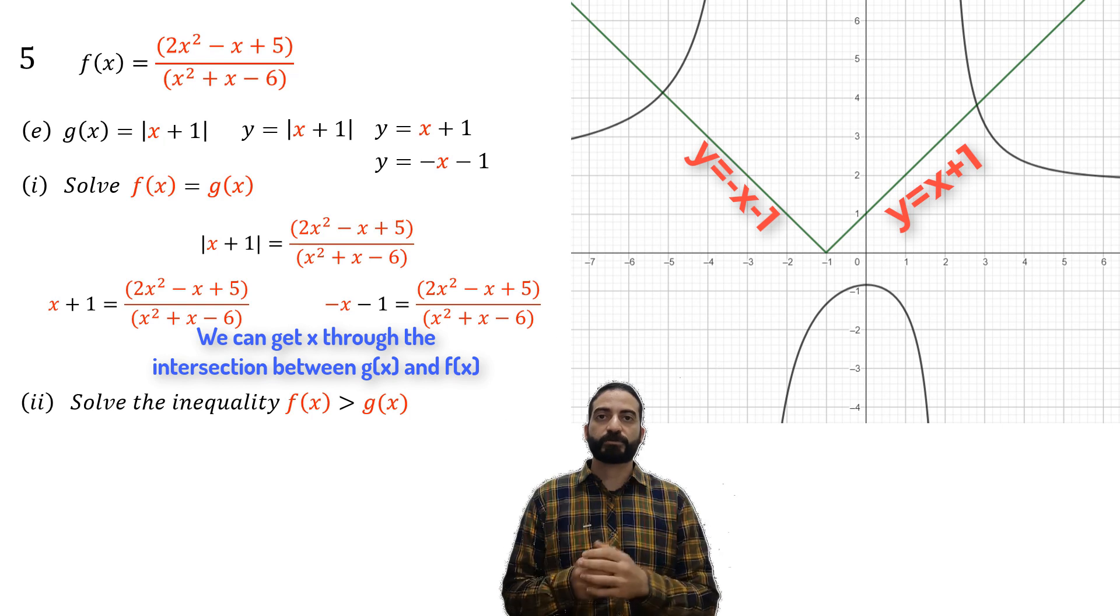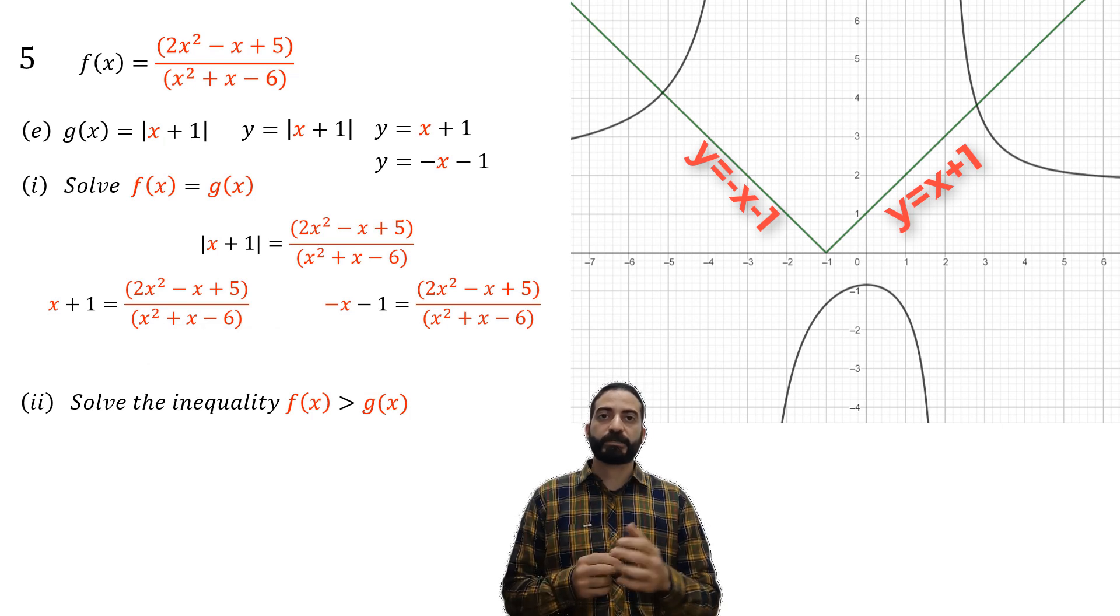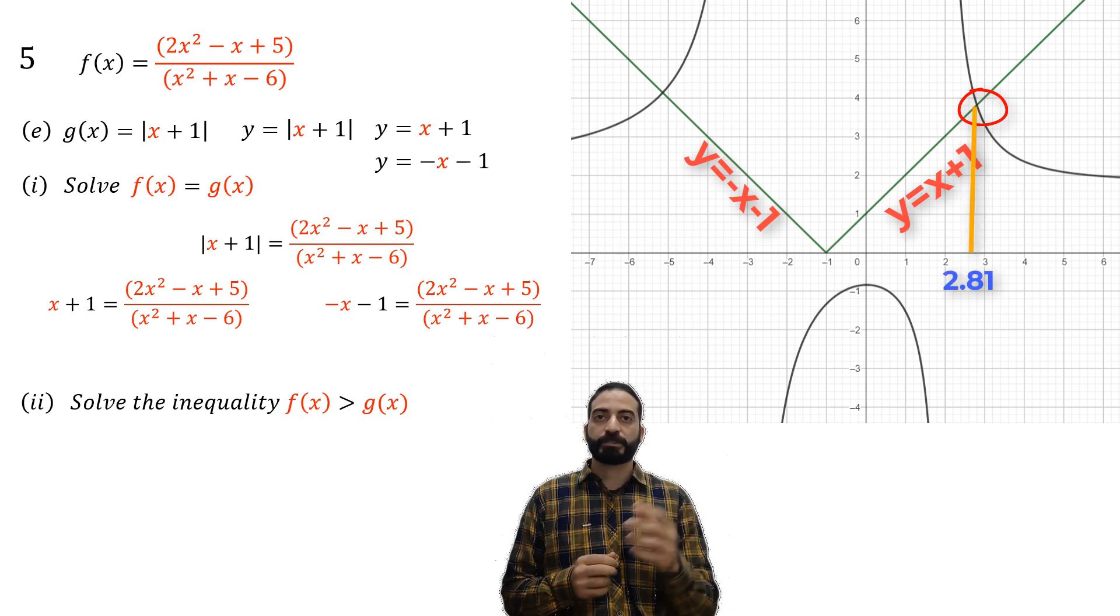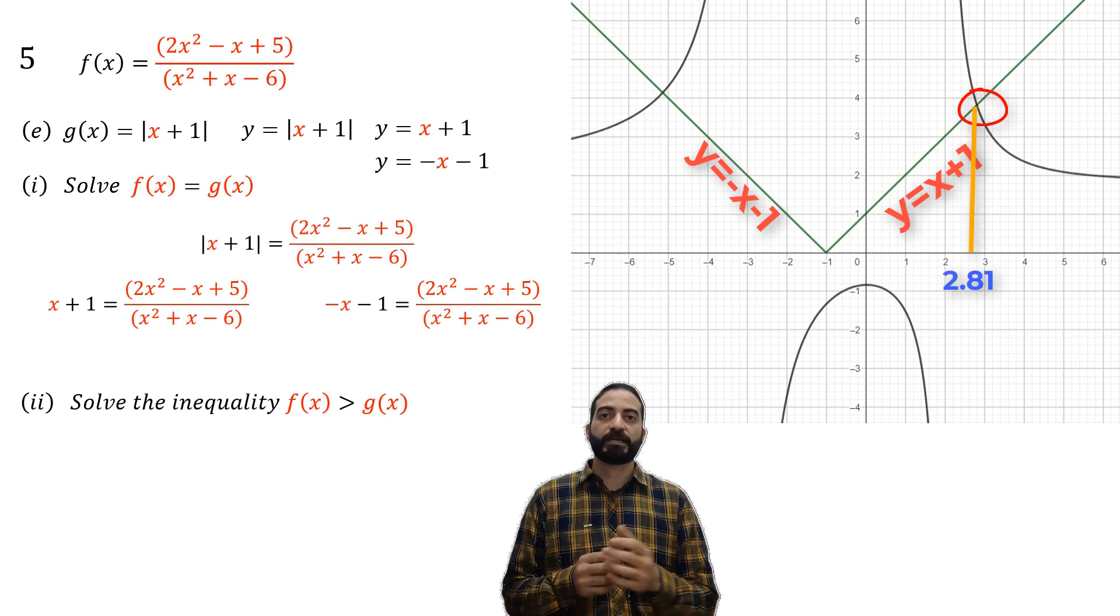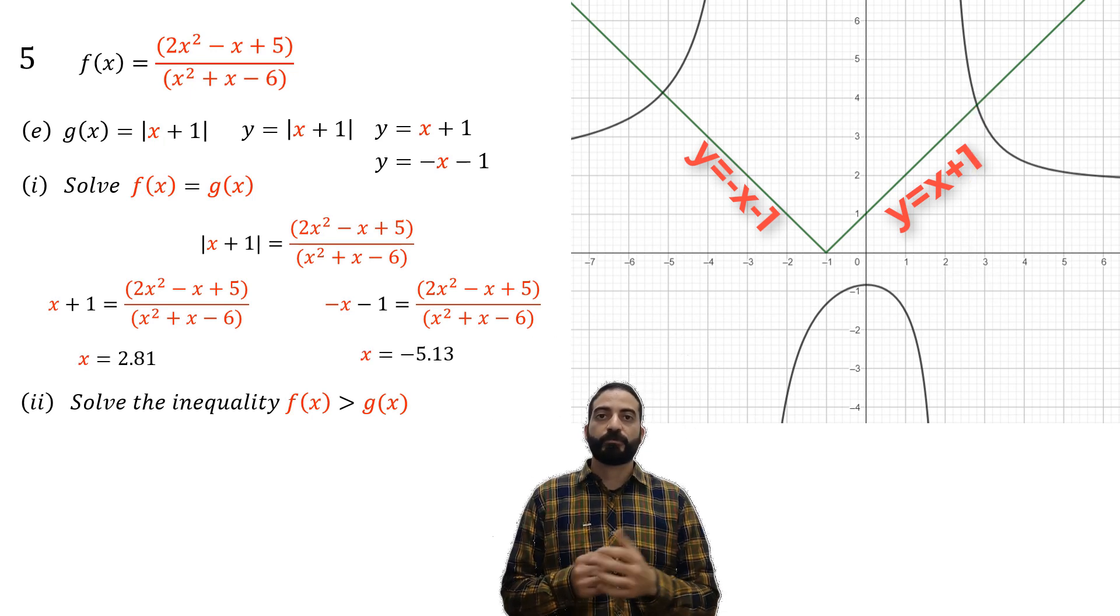We also see that this point is the intersection, which is 2.81. In this way we have obtained the first answer for x. Now we must obtain the intersection for y = -x - 1 and f(x). As we see here, it is the point -5.13.